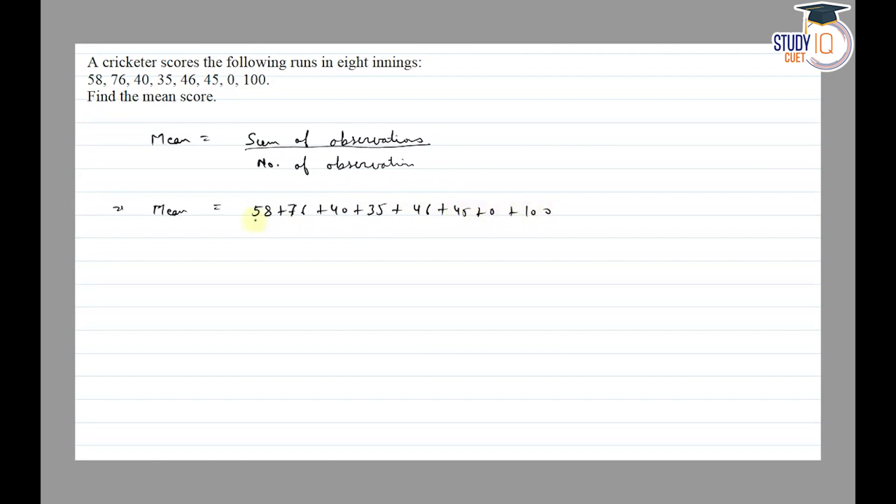Upon number of observations, so we have eight innings, divide by 8. The sum is 400 upon 8. 8 goes into 40, 8 fives are 40, so 50 times. So the mean is